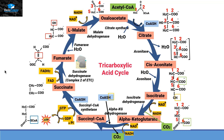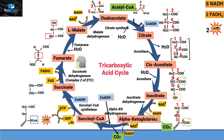Looking at the cycle overall, acetyl-CoA has two carbons, and these two carbons are released as two carbon dioxide molecules; the rest of the molecules regenerate oxaloacetate. Overall, one acetyl-CoA generates three NADH molecules, one FADH2 molecule, and one ATP. Since one glucose converts into two pyruvates and two pyruvates into two acetyl-CoA, one glucose runs two cycles of the Krebs cycle — generating a total of six NADH, two FADH2, and two ATP molecules.